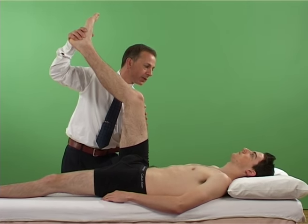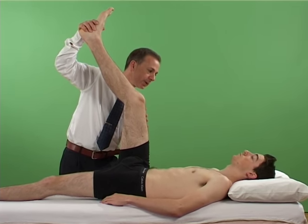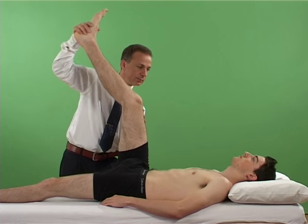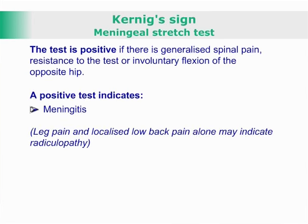The test is positive if there is generalized spinal pain, resistance to the test, or involuntary flexion of the opposite hip, indicating meningitis. Leg pain and localized low back pain may indicate radiculopathy.